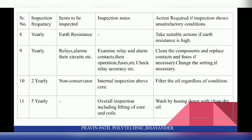On a two-yearly basis, check the non-conservator with internal inspection above the core. Action required: Filter the oil regardless of condition. On a five-yearly basis, perform an overall inspection including lifting of the core and coils, and wash by hosing down with clean dry oil — remove the windings from the transformer and core and fill fresh oil in the transformer tank.